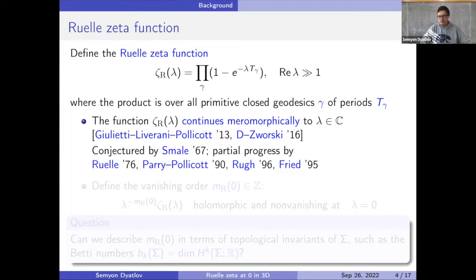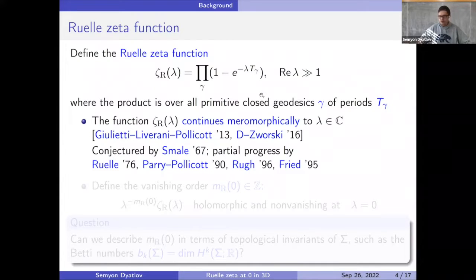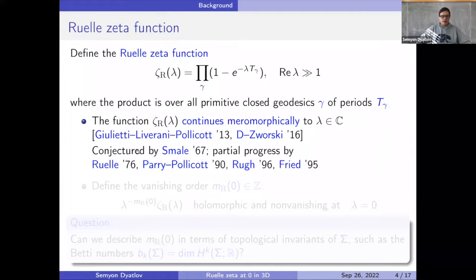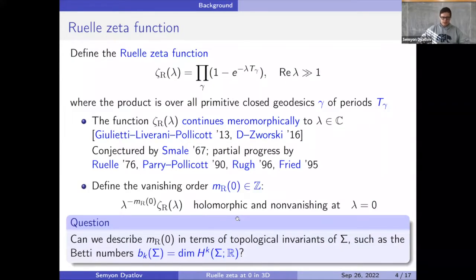The meromorphic continuation was proved by Giulietti–Liverani–Pollicott, and then Dyatlov–Zworski produced a different proof using microlocal methods, which gives more microlocal information useful for us. It's a long study: the continuation was first conjectured in a related setting by Smale in 1967. We'll be studying the vanishing order of this meromorphic function at zero — it's a meromorphic function so the vanishing order is just an integer.